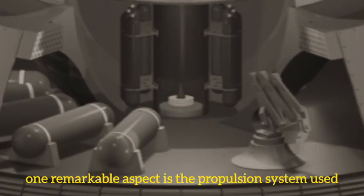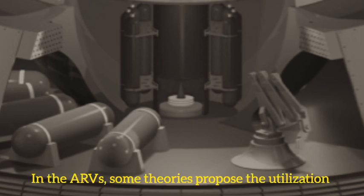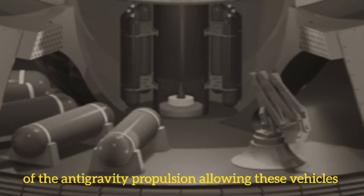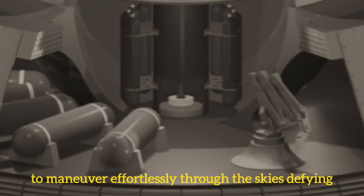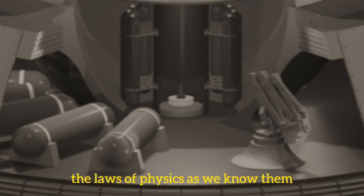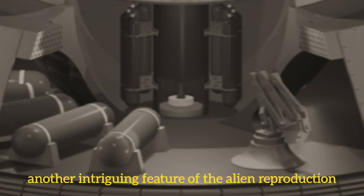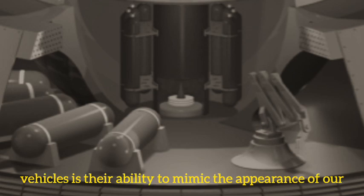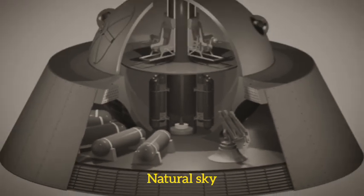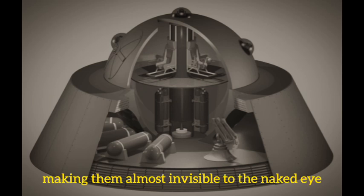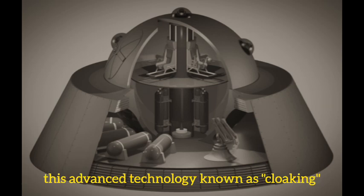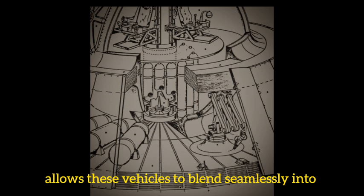One remarkable aspect is the propulsion system used in the ARVs. Some theories propose the utilization of anti-gravity propulsion, allowing these vehicles to maneuver effortlessly through the skies, defying the laws of physics as you know them. Another intriguing feature of the Alien Reproduction Vehicles is their ability to mimic the appearance of natural sky, making them almost invisible to the naked eye. This advanced technology, known as cloaking, allows these vehicles to blend seamlessly into the background.